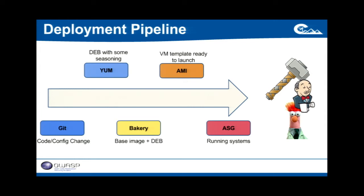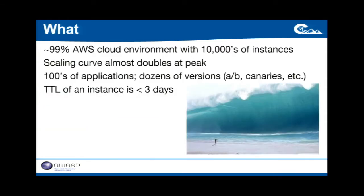What else makes Netflix's environment unique? We're almost 99% in the cloud, with tens of thousands of instances in AWS. Evening peak times actually double our instance counts — when people come home from work and switch on Netflix, we really rely on Amazon's ability to grow with us in load. Along with those hundreds of different applications, we also have dozens of versions of each application. Netflix believes strongly in doing a lot of tests — constantly innovating and adding new features — and they measure whether tests are successful using A/B testing.